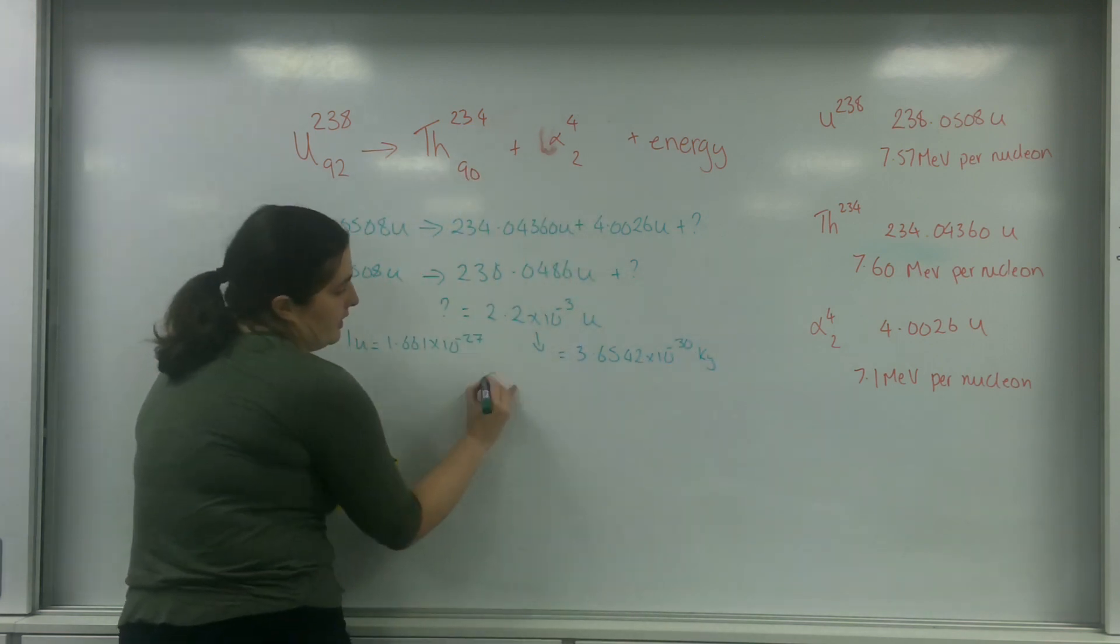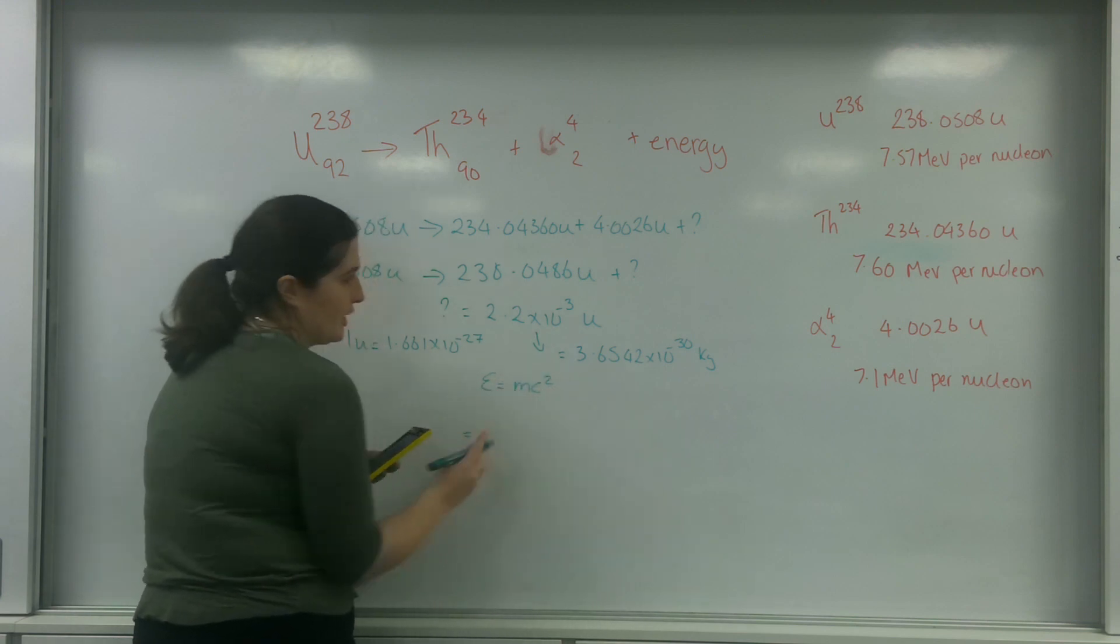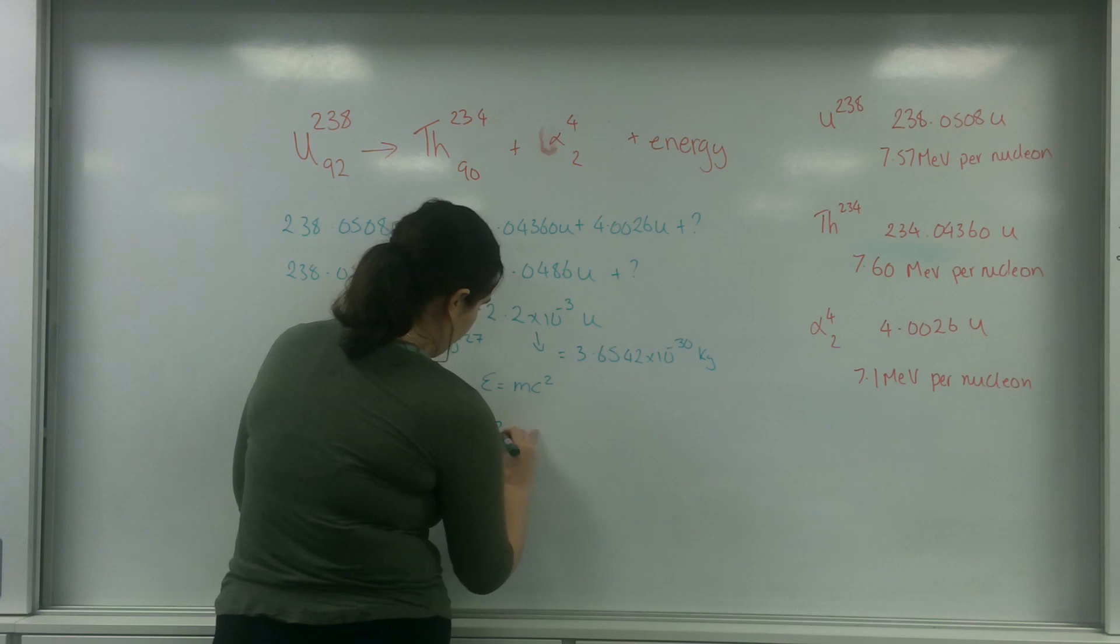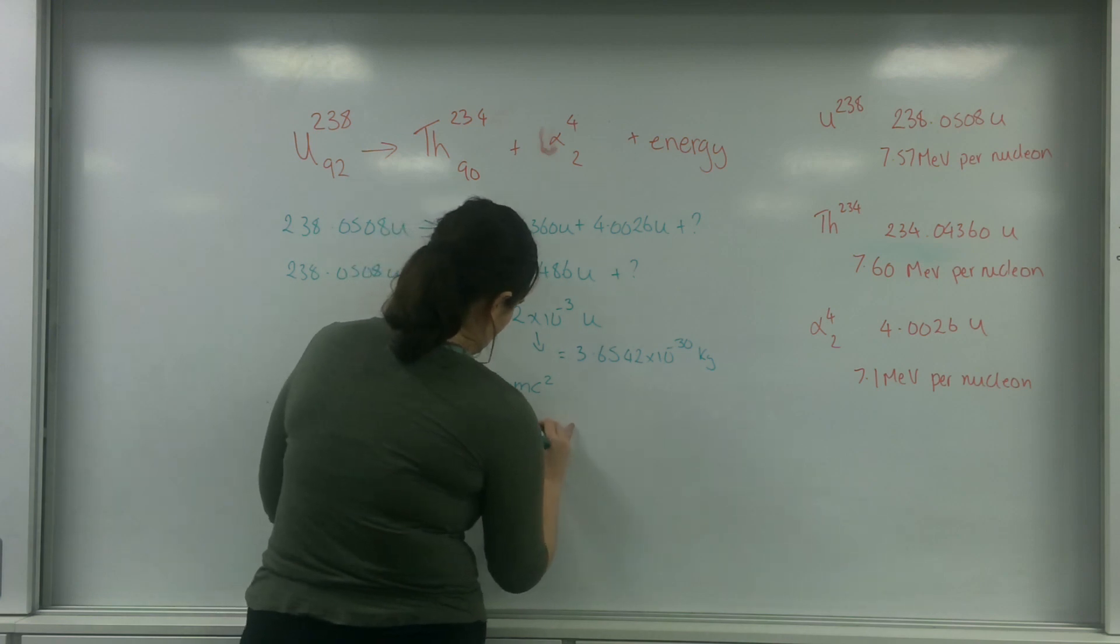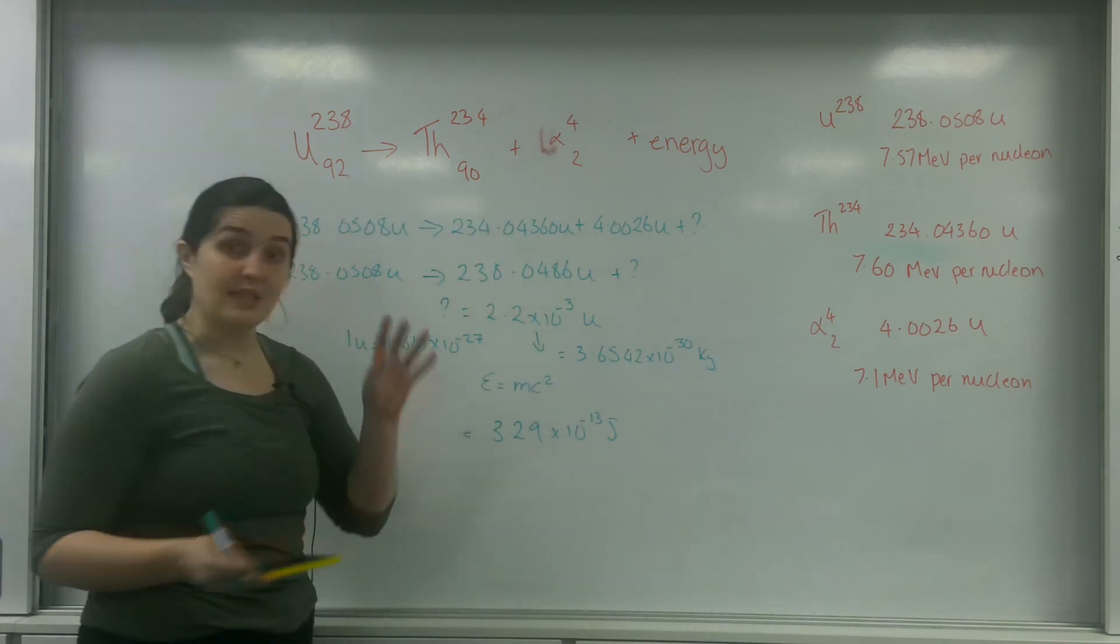I'm going to use E equals mc squared to get my energy. Times that by 3 times 10 to the 8, times that by 3 times 10 to the 8, and I get energy at 3.29 times 10 to the minus 13 joules being emitted for this reaction.